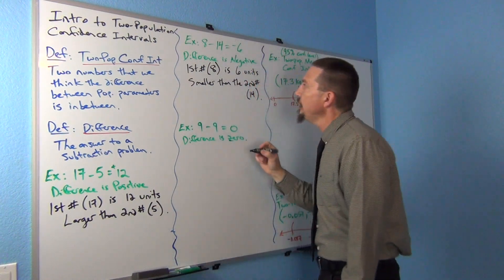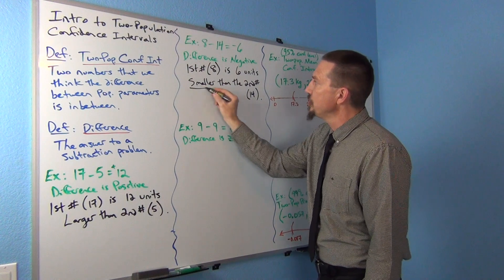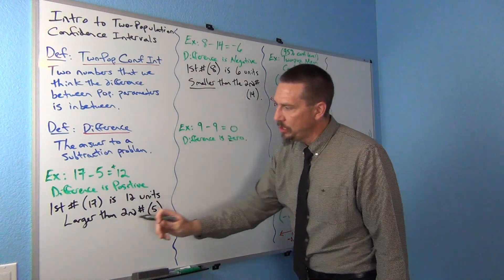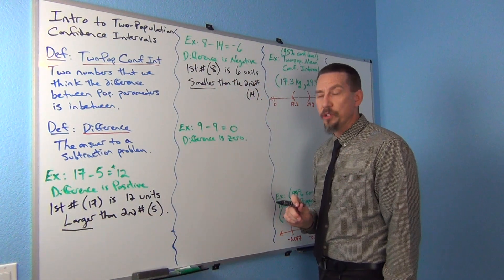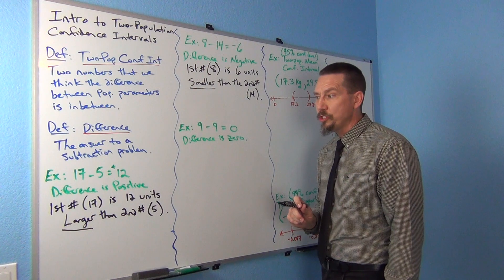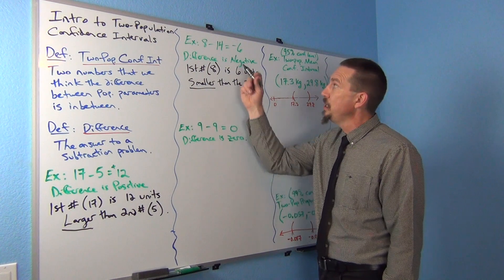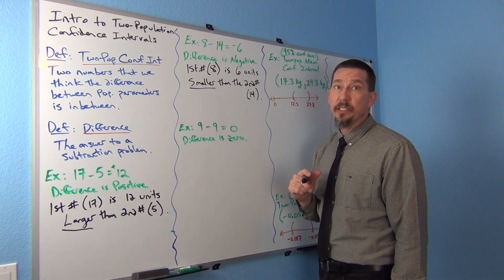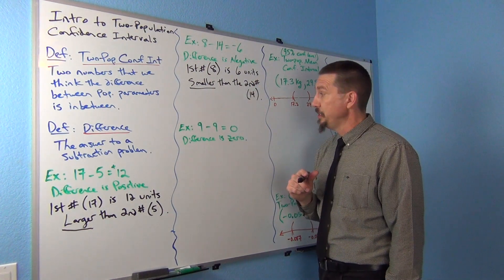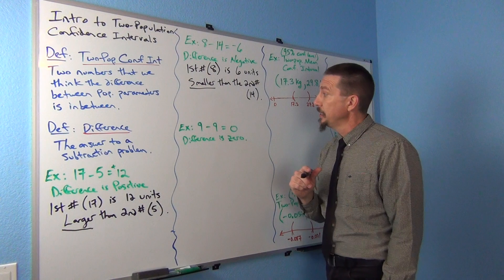See the key words: smaller, larger. A positive difference means the first number is larger than the second. A negative difference means the first number is smaller than the second.